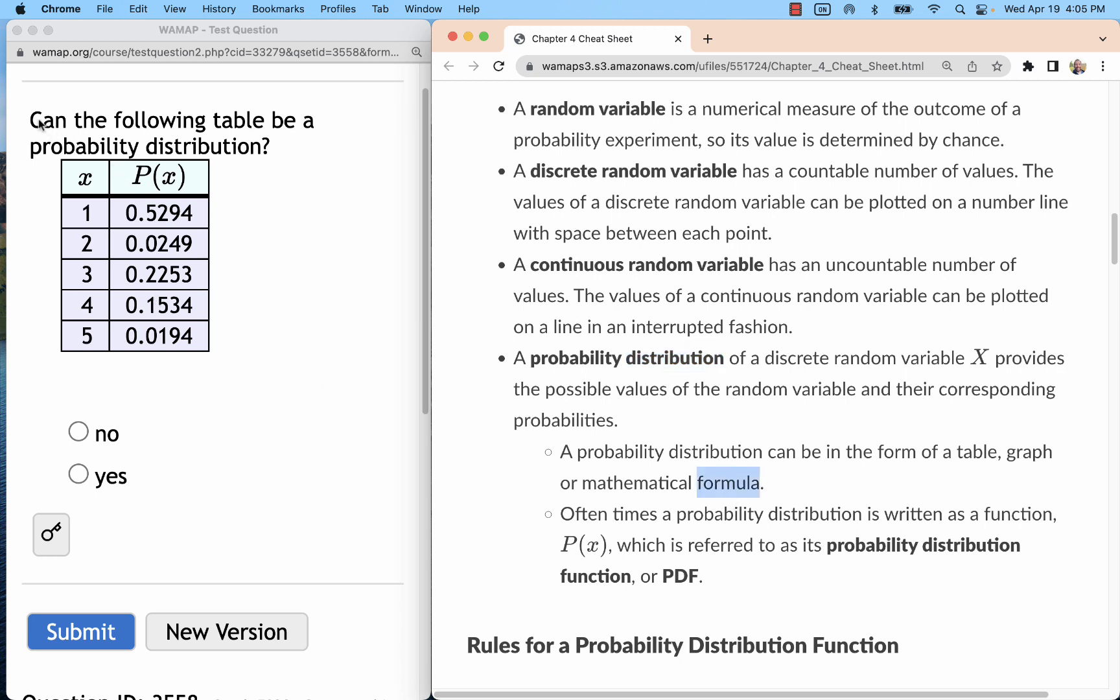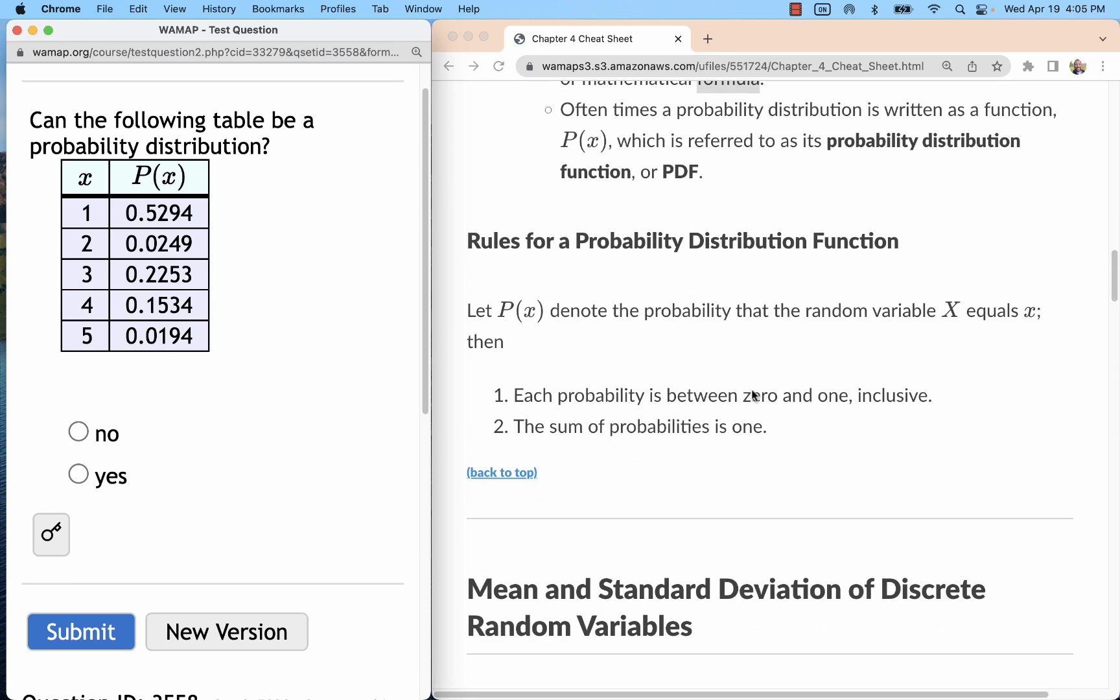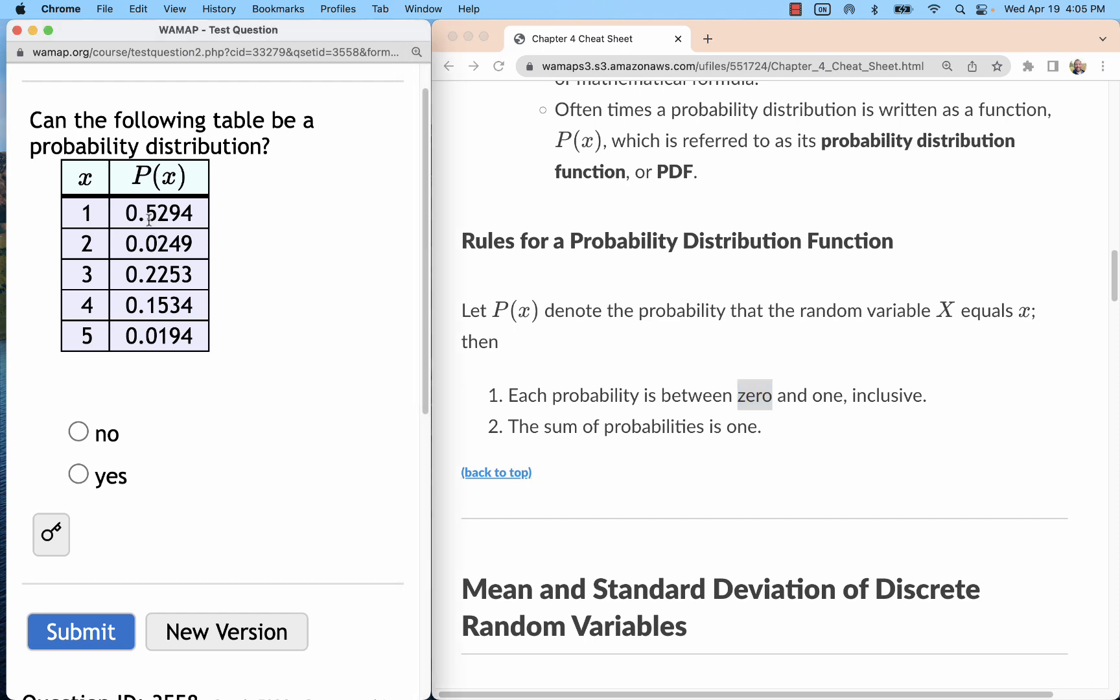Now when we're checking to see if something could be a probability distribution, we just need to make sure that none of the probabilities are outside of this range from zero to one. For example, if you had a 1.2 that would tell you that you had a 120 percent chance of success. That's impossible, and it's impossible to go below a zero probability into the negatives.